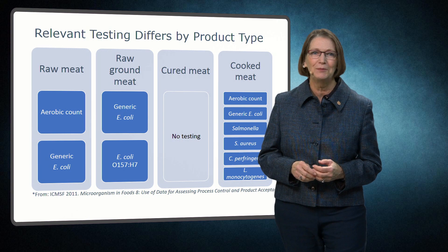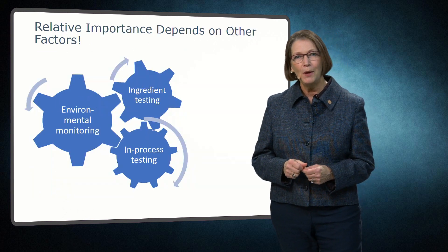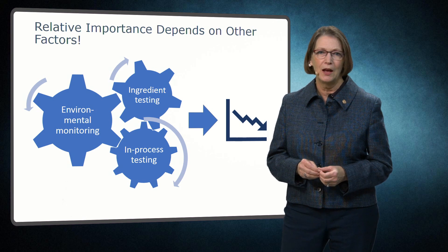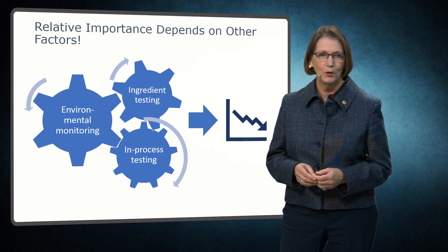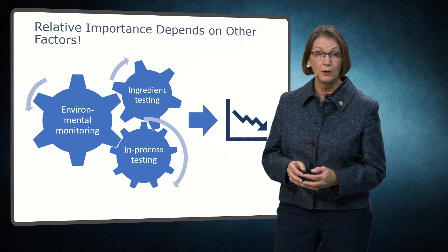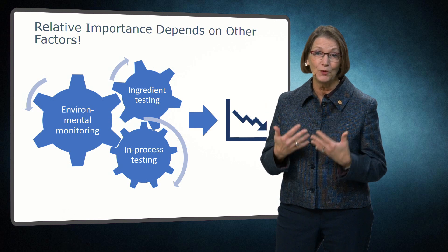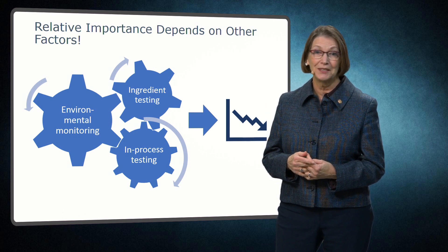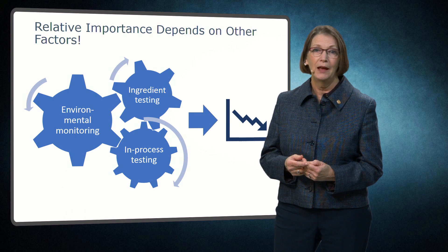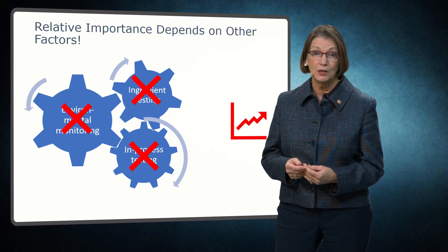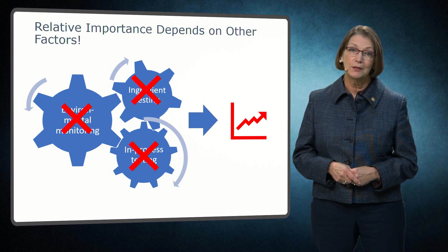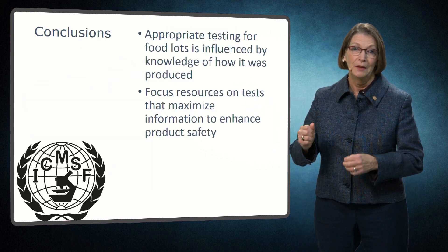It also provides sampling plans similar to those in the cereal example. Keep in mind that the relative importance of a test must be evaluated in the context of a microbiological testing program. For example, if ingredient, in-process, and environmental monitoring are routinely conducted in a diligent manner, establishing a stable processing environment, and the information is routinely used for trend analysis and process improvement, then the relative importance of finished product testing is likely to be low. However, if upstream testing is done only occasionally or in a manner that does not provide confidence that the process is under control, then the relative importance of finished product sampling may go up.